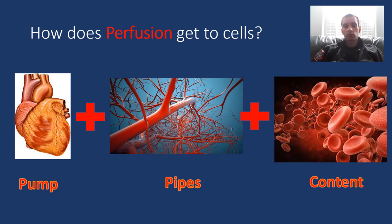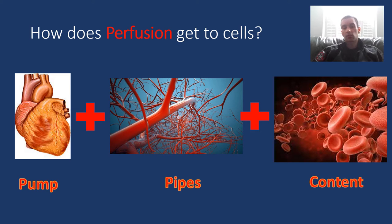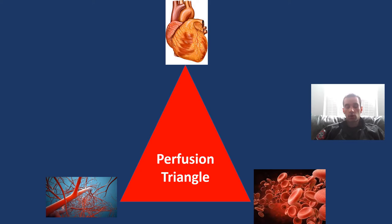So how does perfusion get there? In order for perfusion to occur, you need: one, the heart or the pump to push it around; two, the blood vessels or the pipes to transport it; and three, enough blood in there to actually carry it — sometimes called the container function. Pump, pipes, and container. Some people put these together into a triangle called the perfusion triangle.